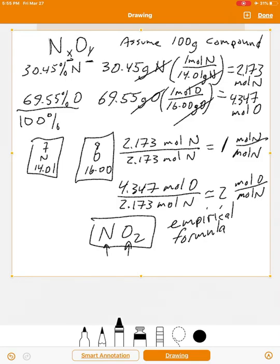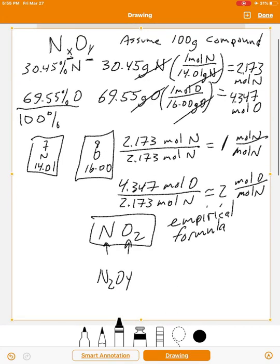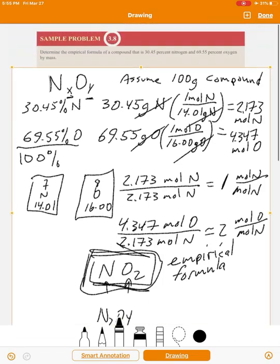Now, in fact, that may not be the actual chemical formula. The molecular formula could be different. Here's a possibility. The molecular formula could be NO2, but it could also be N2O4, but we don't know, right? You can't tell from that piece of information what the molecular formula is. But you can determine the empirical formula, which is what we were asked to do. There you go. Empirical formula given these amounts.